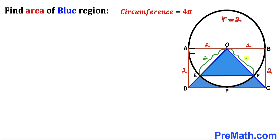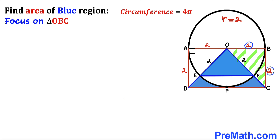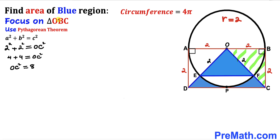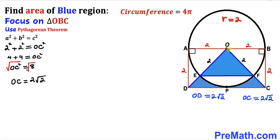Now let's focus on right triangle OBC, with side lengths 2 and 2. We apply the Pythagorean theorem: a² + b² = c², so 2² + 2² = OC². Taking the square root of both sides, OC = 2√2 units. Likewise the other side OD = 2√2 as well.